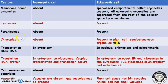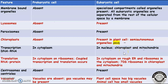Membrane-bound organelles — lysosomes, peroxisomes, chloroplasts — are all absent in prokaryotic cells but are specialized membrane-bound organelles present in eukaryotic cells. Chloroplasts are semi-autonomous organelles present in plant cells. In transcription, RNA is produced from DNA; this occurs in the cytoplasm in prokaryotes because they don't have a nucleus. In eukaryotes, transcription occurs in the nucleus for the nuclear genome, and in chloroplasts and mitochondria respectively for those genomes.